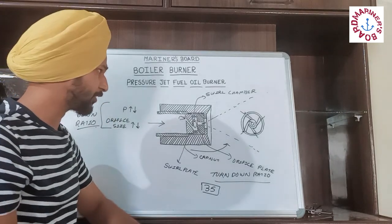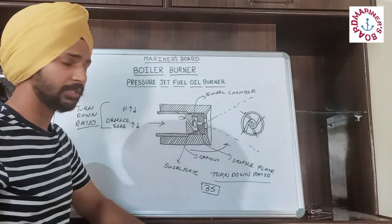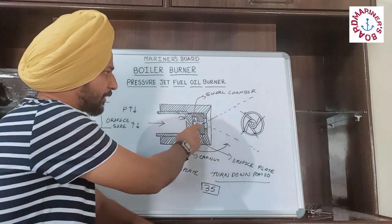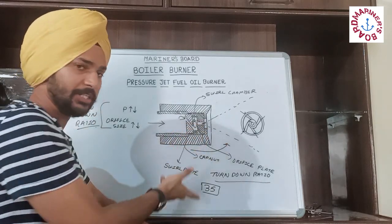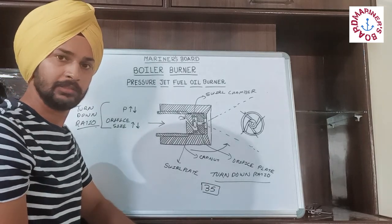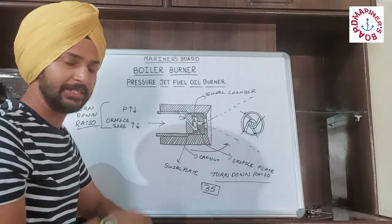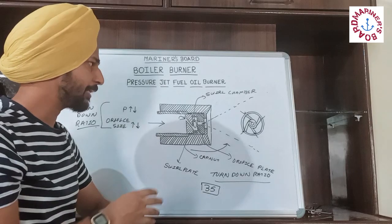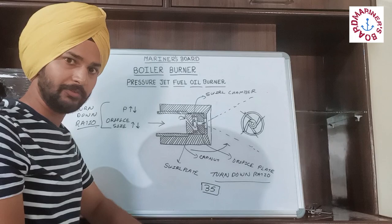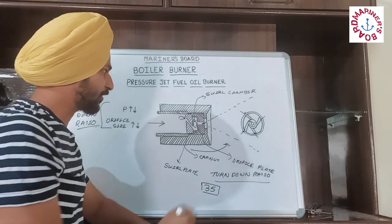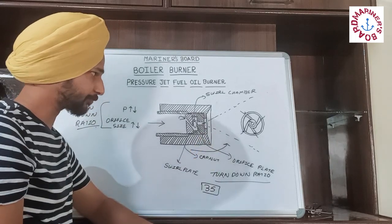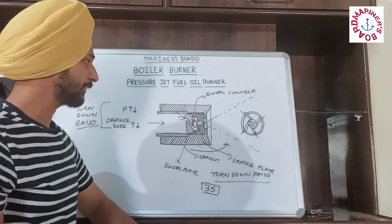For controlling the turn down ratio of this burner, we can either increase or decrease the pressure, or we can change the size of the orifice in the orifice plate by opening it and putting a new orifice plate. This design is not very efficient because every time we have to control the turn down ratio, we have to open the cap nut, open the orifice plate, and put a new orifice plate — so this design has its own disadvantages. The same is the case for the pilot burner studied in the basics: it also has the sole plate, sole chamber, and orifice plate.